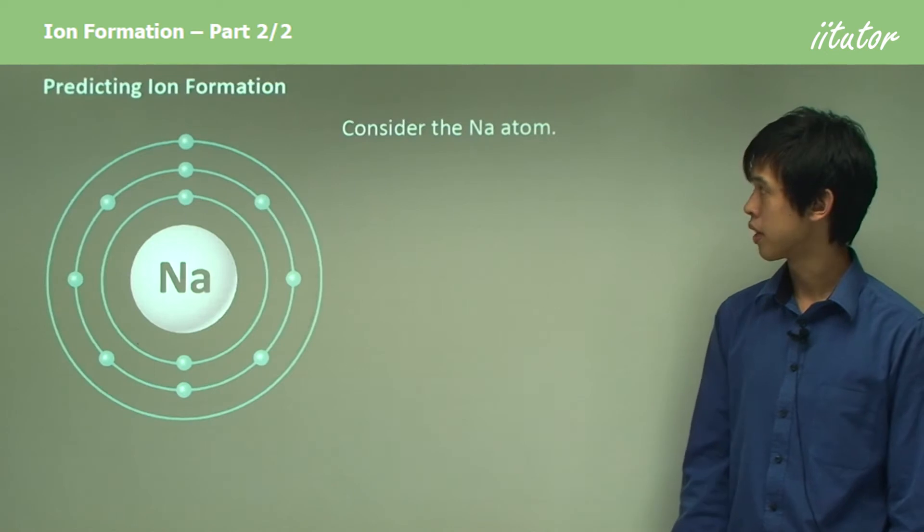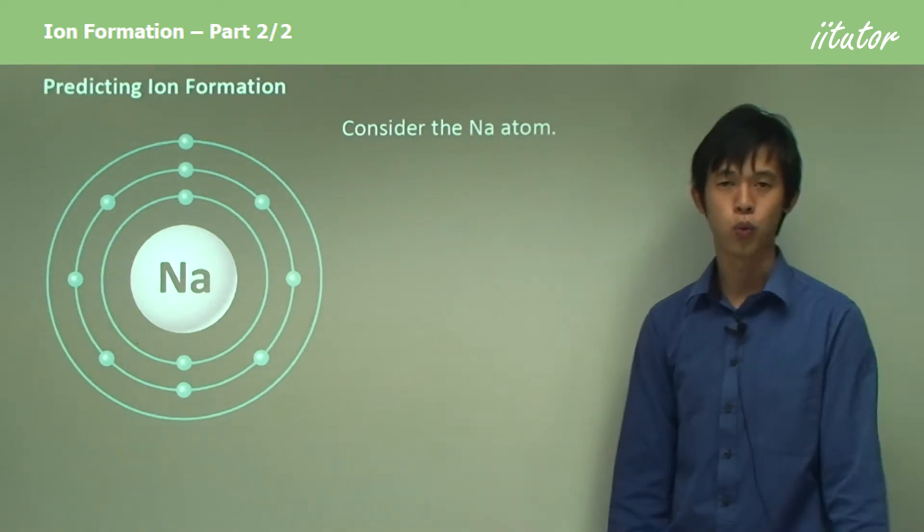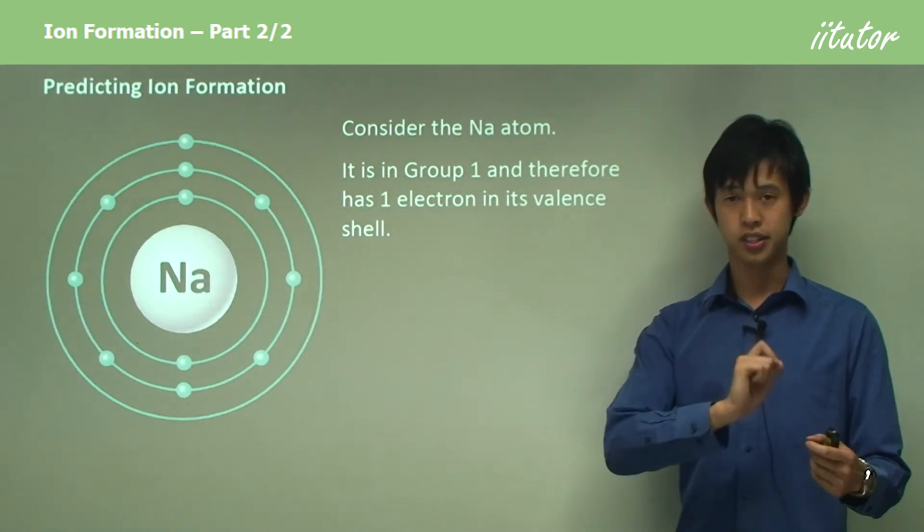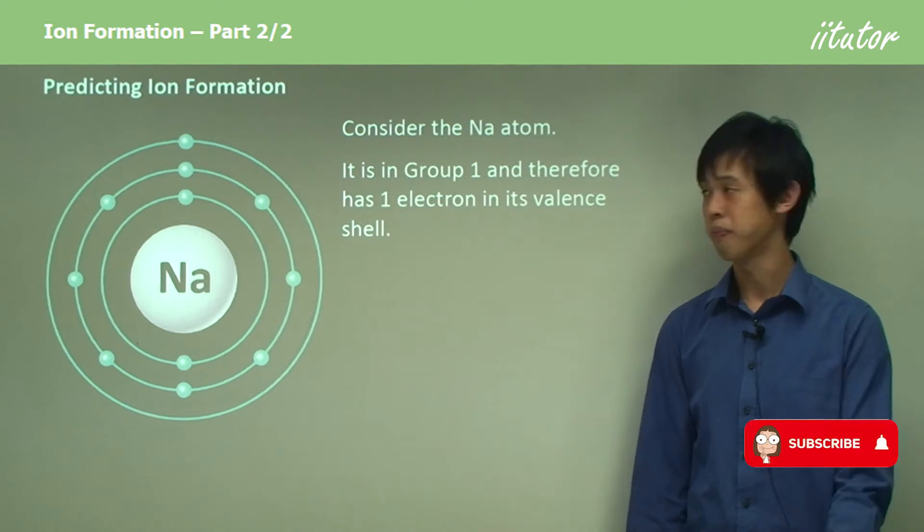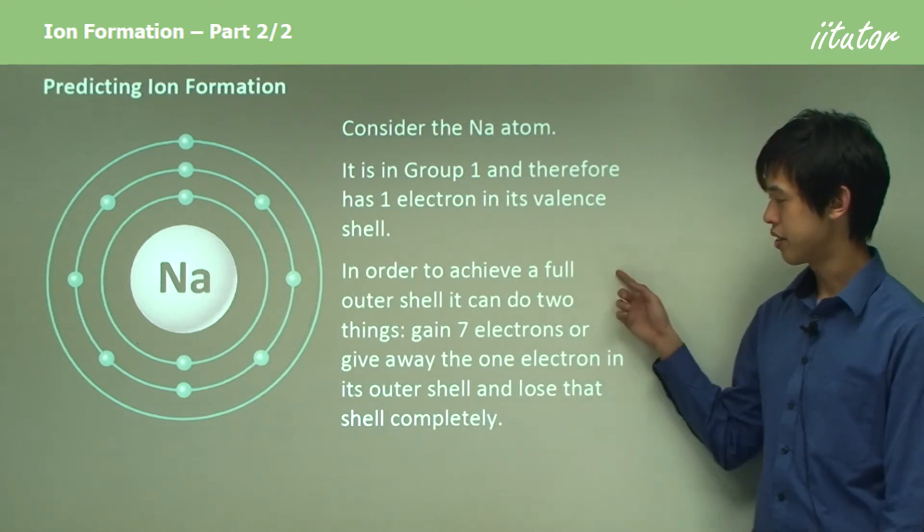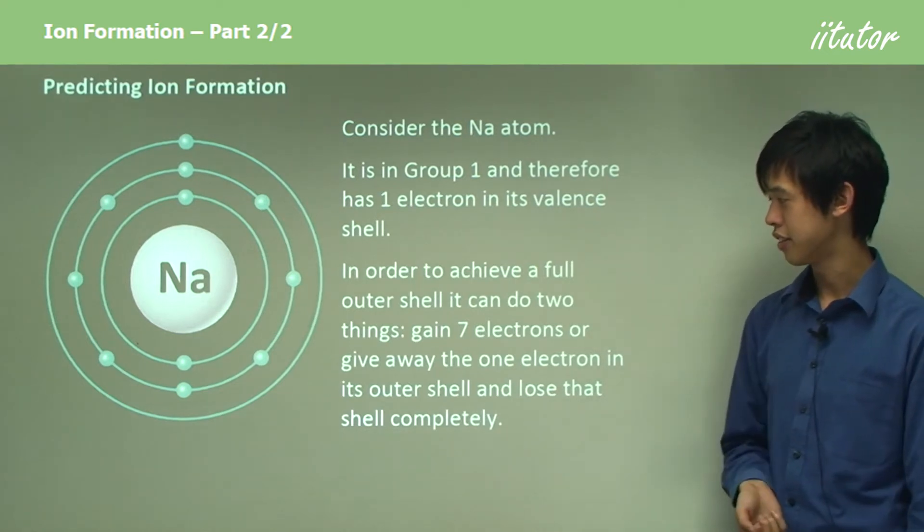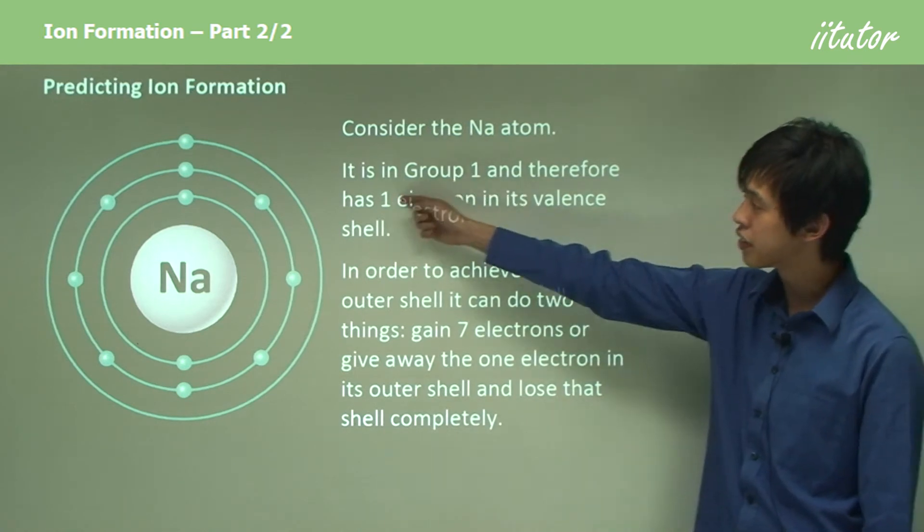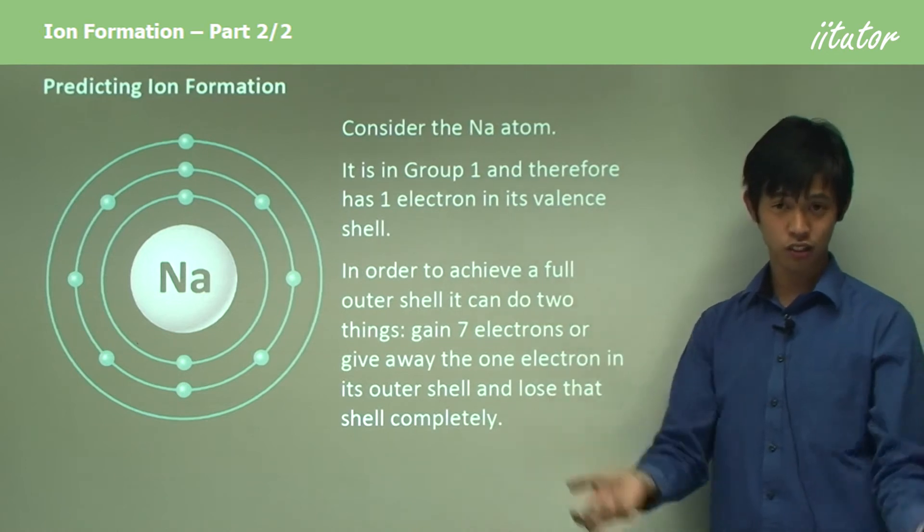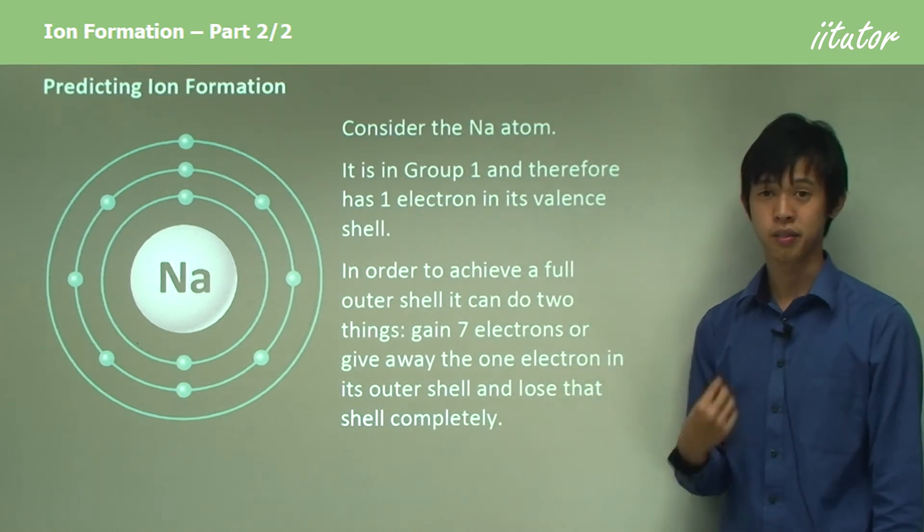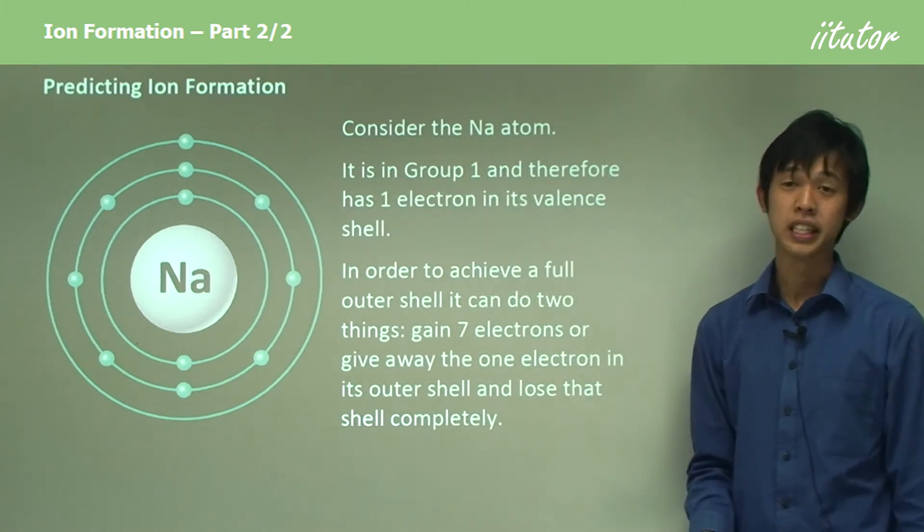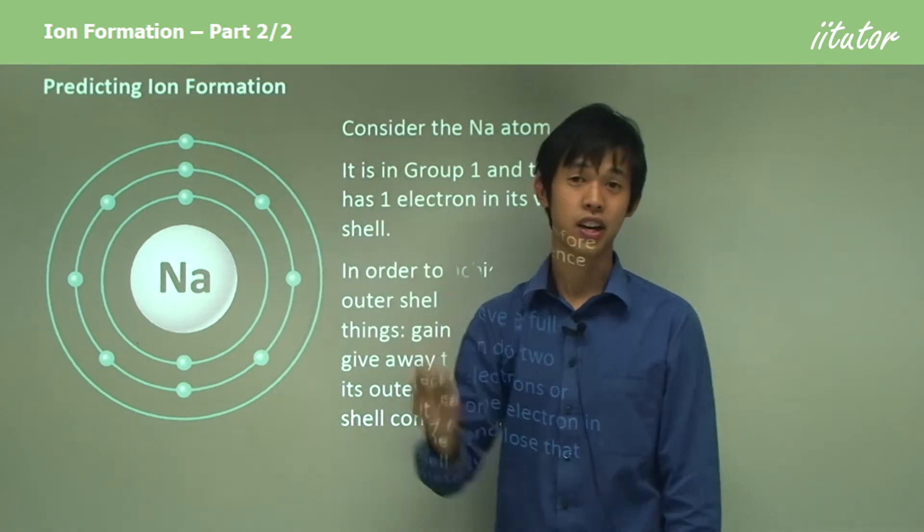Consider the sodium atom. It's in group one. Look at your periodic table at home and you can see that sodium is number 11. It's in group one and therefore has one electron in its valence shell. In order to achieve a full outer shell, it can do one of two things. It could either gain seven electrons or give away the one electron in this outer shell and lose that shell completely. Instead of gaining seven electrons, it could just dump the outer shell.